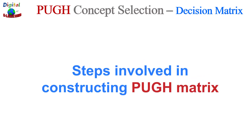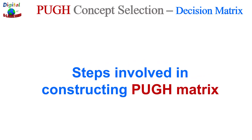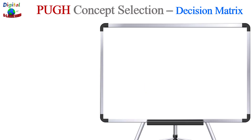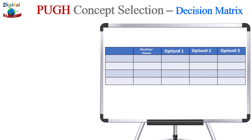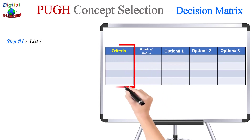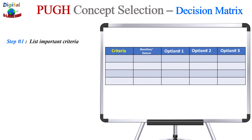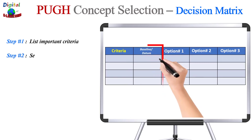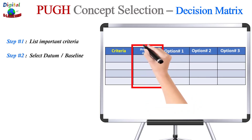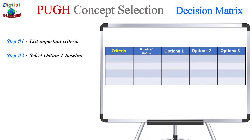Let us now see the steps involved in constructing a Pugh matrix or decision matrix. Using a reference sample template, the first step is to list all the important criteria that will be used for evaluation in the extreme left vertical column. The second step is to define your datum or baseline, which is the initial or most feasible solution. Every alternative or option will be evaluated against this particular datum.